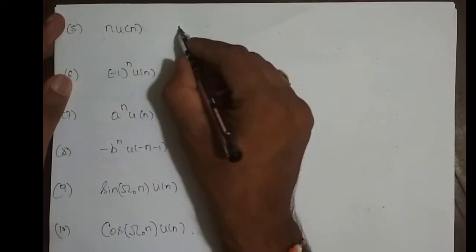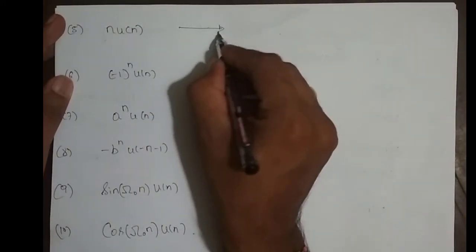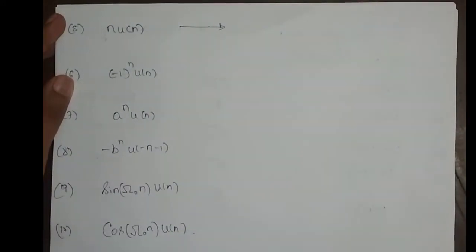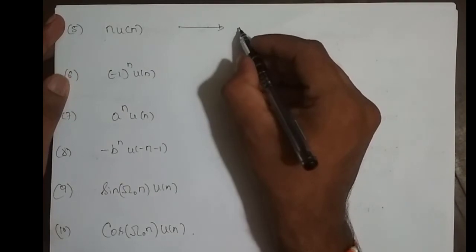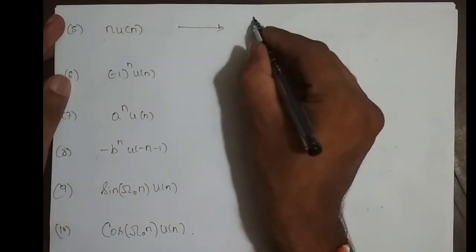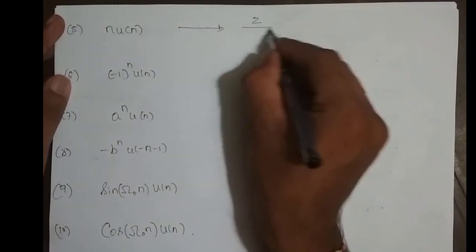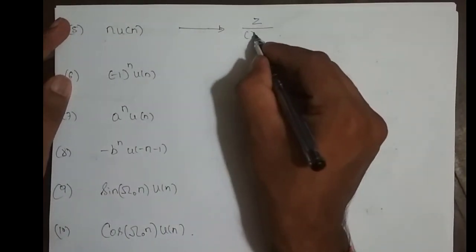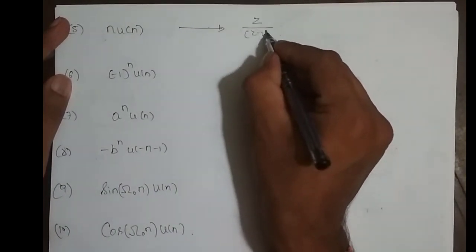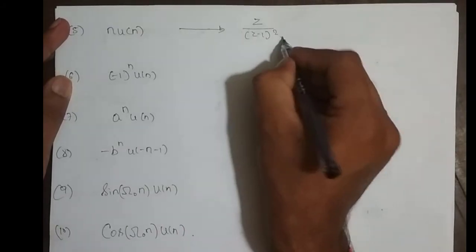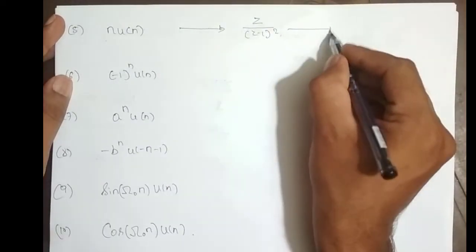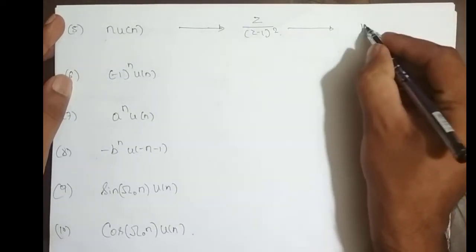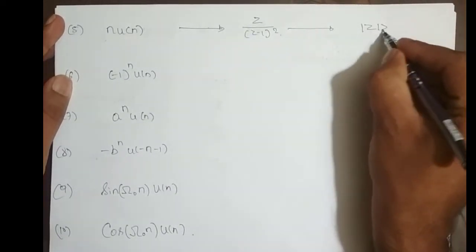We have one more sequence: n·u(n). Its Z-transform is z divided by (z - 1)², and its ROC is magnitude of z greater than 1.